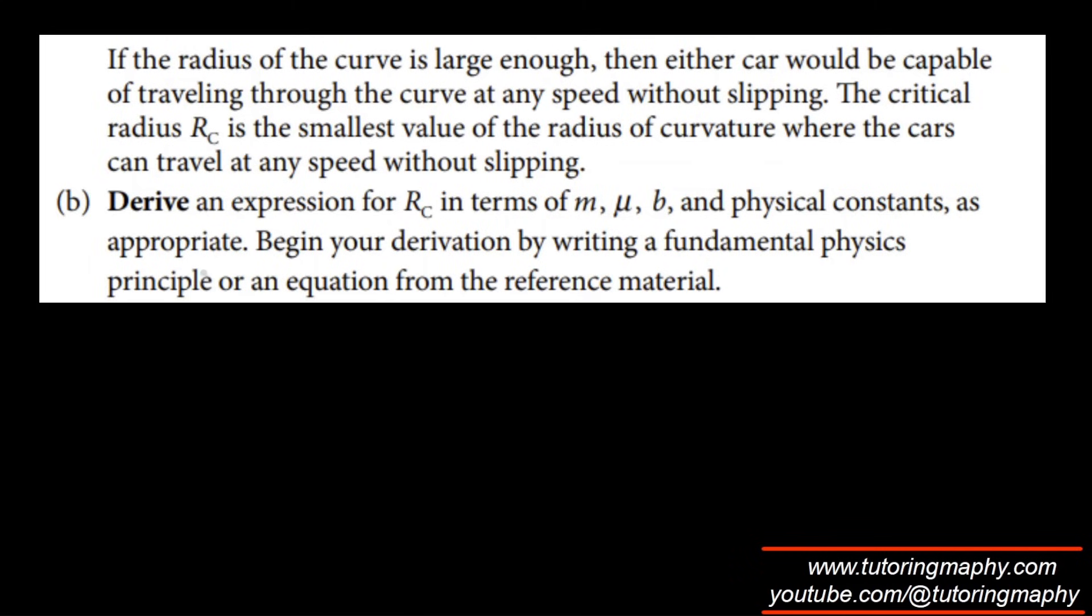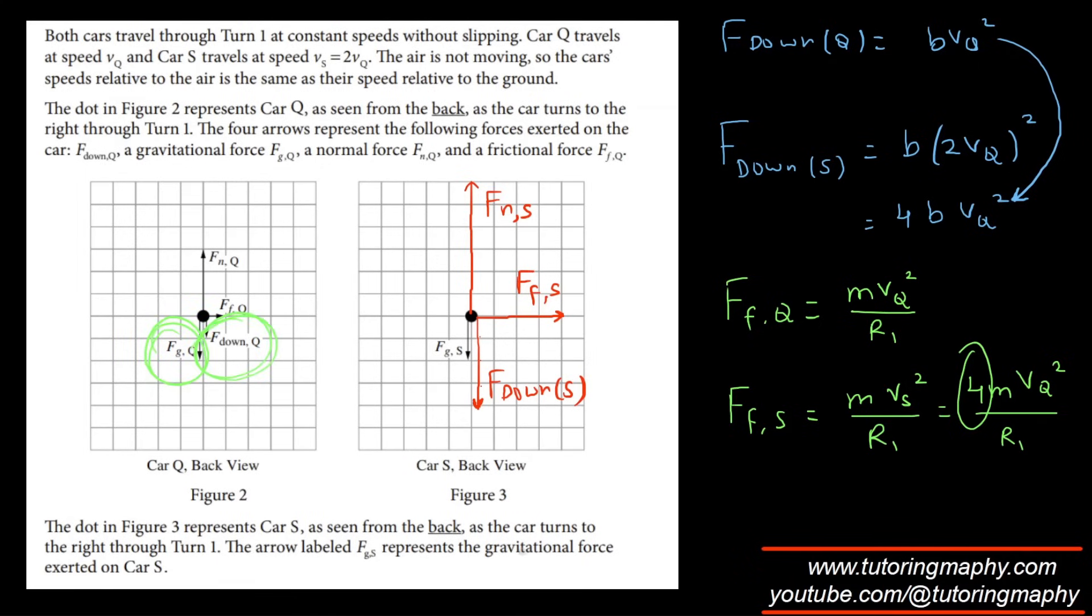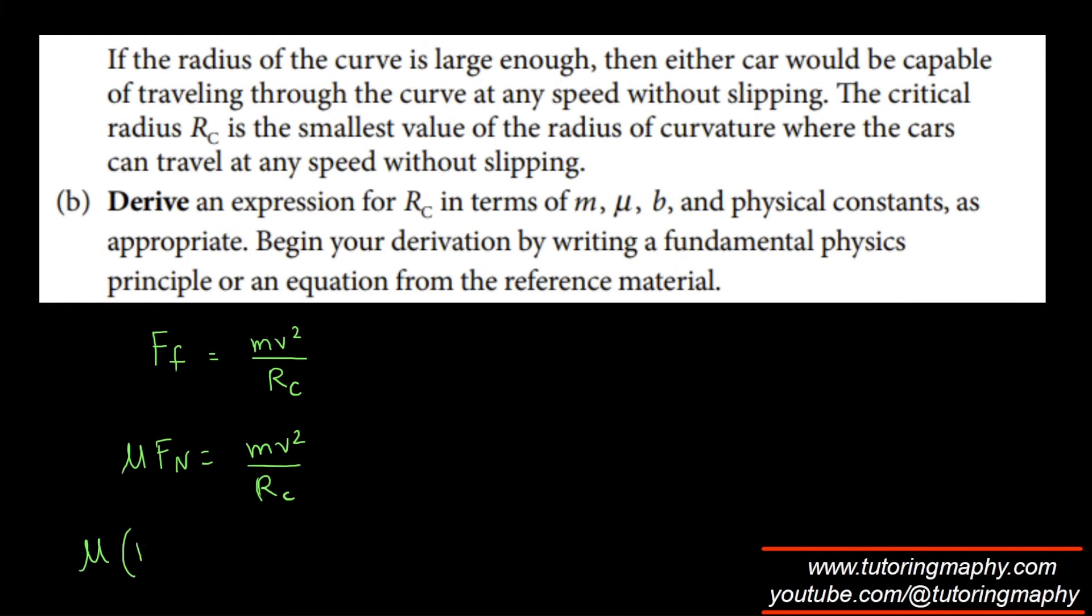So I will say that since it is the minimum value and it is not slipping and R is minimum, obviously it makes sense that the static friction must be acting at its highest level. So I'm going to say that friction is going to be equal to MV^2 over R. F is just μ times normal reaction. So that is equal to MV^2 over R_C. What is the normal reaction? It is the sum of gravity and the downforce. So the gravity force is just going to be MG and the downward force is going to be BV^2, is going to be MV^2 over R_C. I'm going to cross-multiply. So it will become R_C times μ times (MG + BV^2) is equal to MV^2. And then R_C is going to be MV^2 over μ times (MG + BV^2).